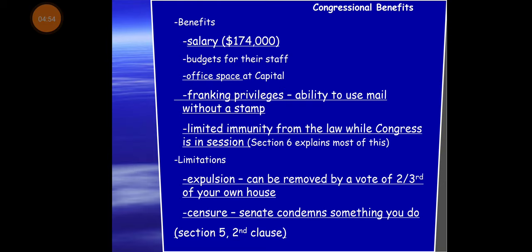One vocab term that shows up in the standards quite a bit is the franking privilege — it usually throws everybody. It's the ability to use the mail without a stamp. Congressmen will basically use up a few hundred thousand dollars worth of government money every year just mailing things to their constituents — usually you can drop it in a trash can. It could be just to respond to a letter you wrote them, or to send you updates on what they're doing.